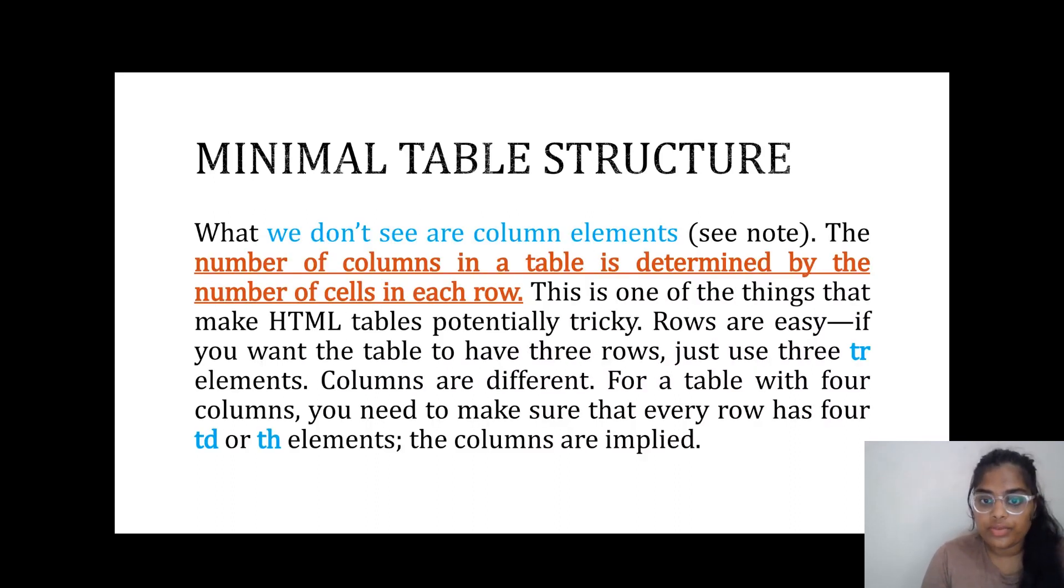Why don't we see column elements? It's like TR is there, TD is there, TH is there. Why can't we have TC for the column? The number of columns in a table is determined by the number of cells in each row. This is one of the things that make HTML tables potentially tricky.